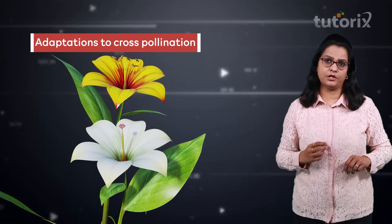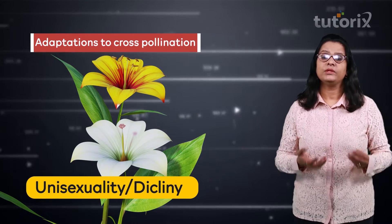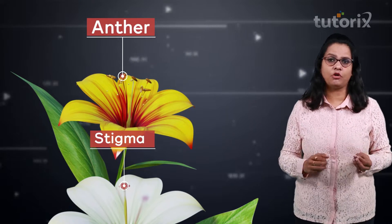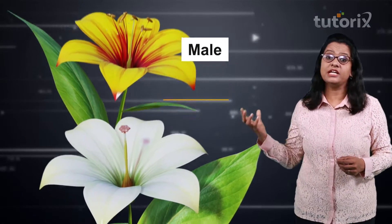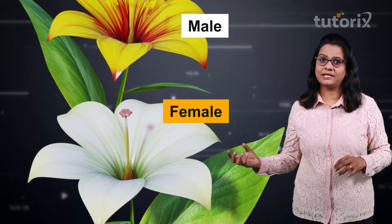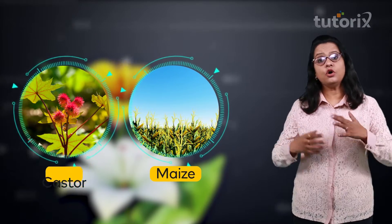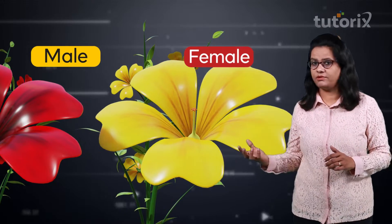The very first adaptation for cross-pollination is unisexuality, also called dicliny. Flowers that undergo cross-pollination are unisexual — the male and female reproductive organs are separate. If the male flowers and female flowers lie on the same plant, such plants are called monoecious plants, like castor and maize. In these plants, cross-pollination will also occur.